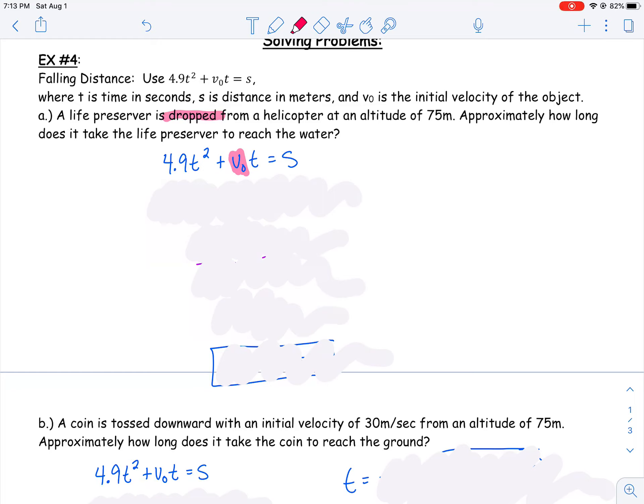And because the helicopter was up above the water 75 meters, that means my distance s is 75. So I can plug in a zero for my velocity and a 75 for my distance. Zero times t is just zero, right? So then I end up with a quadratic equation that says 4.9t² equals 75. I should be able to use our techniques of solving quadratics to find t, how long it takes to reach the water.